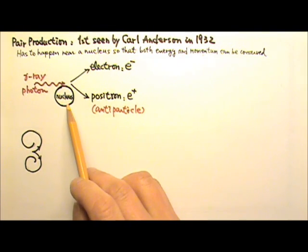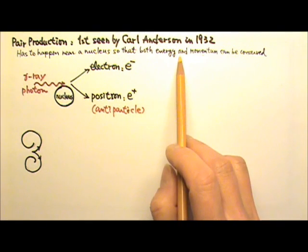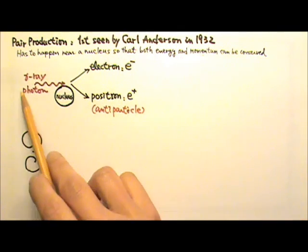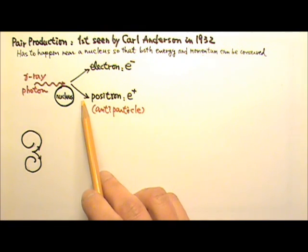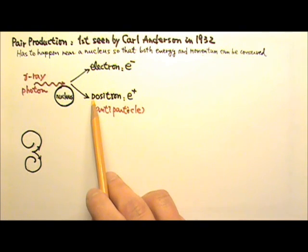Now, pair production has to happen near a nucleus, so that both energy and momentum can be conserved. When a photon turns into two particles with mass, we have photon energy turning into mass. This is consistent with Einstein's mass-energy equivalence and his famous equation E equals mc squared.